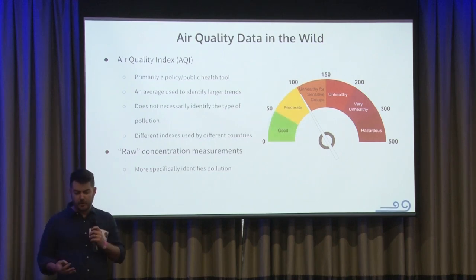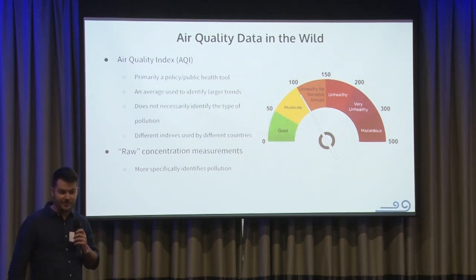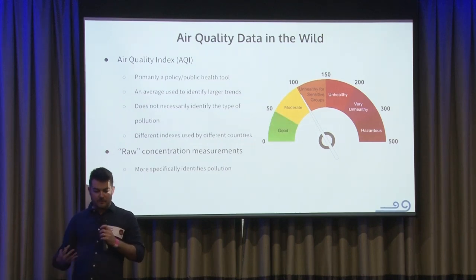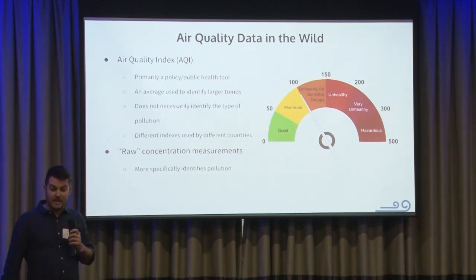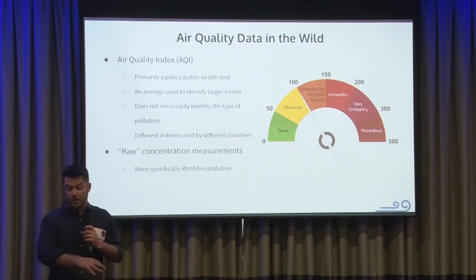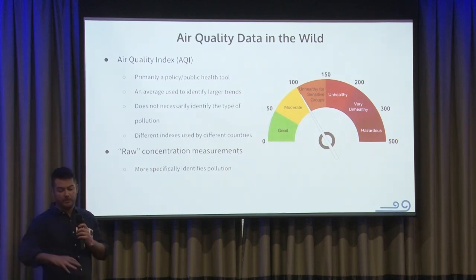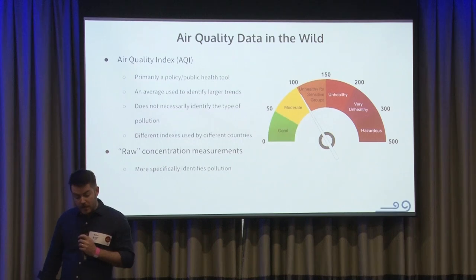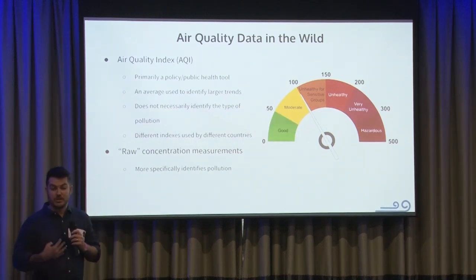How many people have heard of an AQI before? An AQI is an air quality index, and this is probably the most common form of air quality data you've seen in the world. You'll see something with this kind of scale — I like to say, a stoplight. Green is good, all the way to purple is hazardous. At OpenAQ, we don't ingest air quality indexes, and I'm going to explain why.